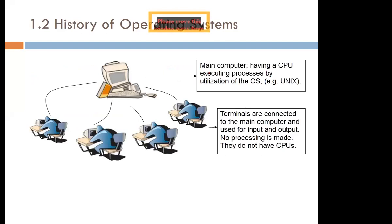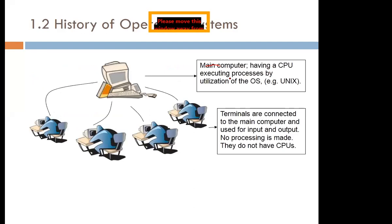You can also have more than one user on a terminal, and they can all execute programs. The main computer — the CPU — is managed through the operating system, and terminals connected to it are used for input and output only; they don't do any processing and don't have their own CPU. They simply use all the processors and storage in the main computer system — we call these terminals.